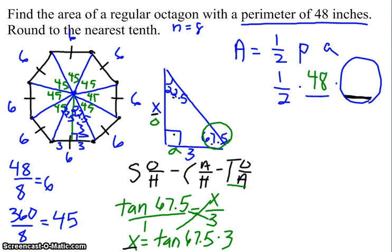So pick up your calculator right now and punch in the tangent of 67.5 times 3. I got a big, long answer.